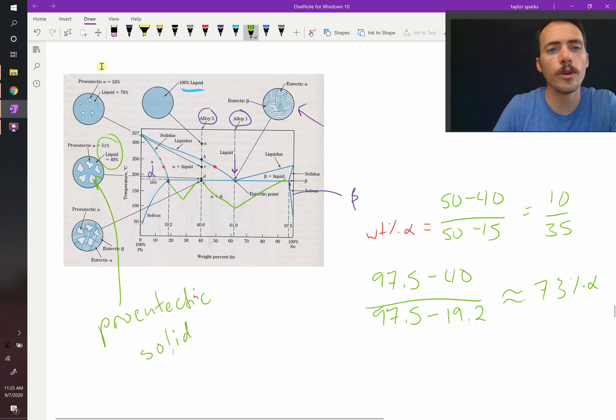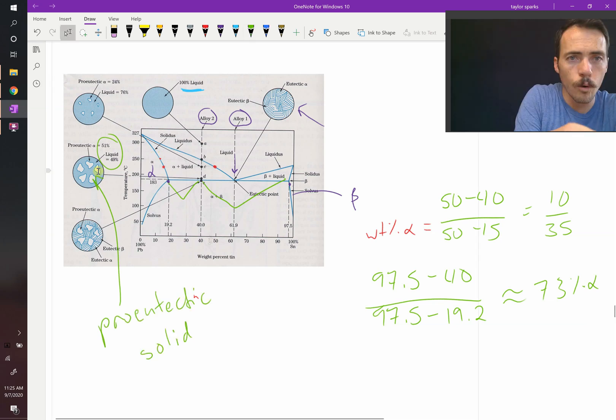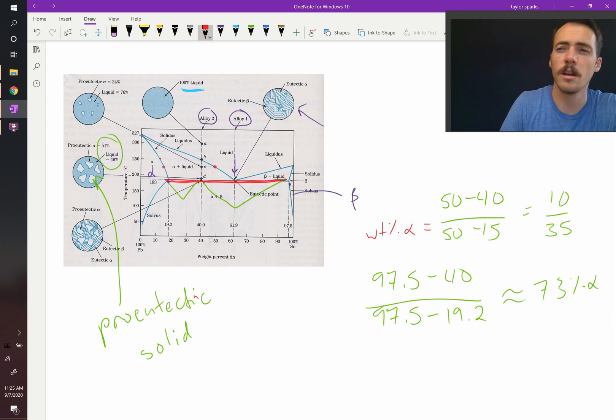We call it the pro-eutectic solid because it's the solid that forms before the eutectic reaction. Remember, the eutectic reaction is the one that happens along this flat line in the center here. That is our eutectic reaction. So any solid that forms before that point is pro-eutectic.